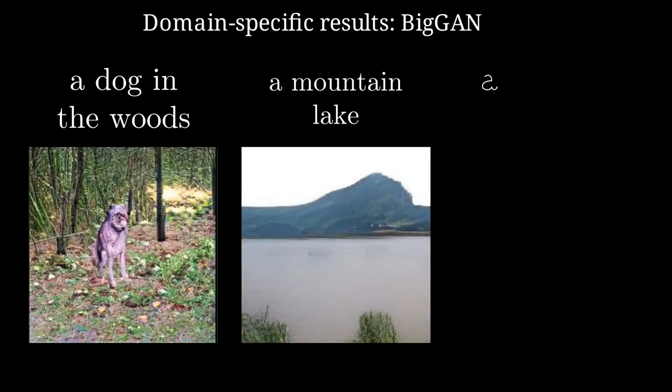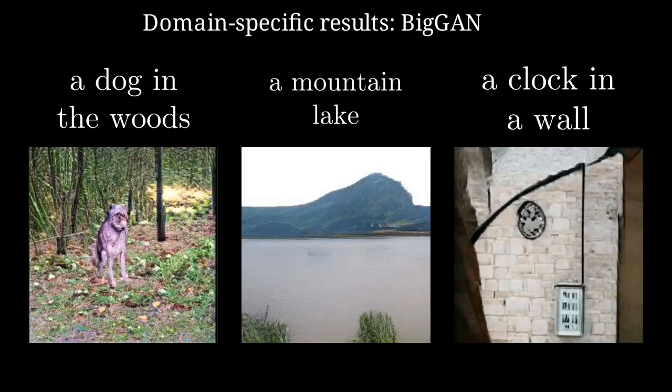These are the results for the general target text using BigGAN. The images resemble the target text, but major visual artifacts are present in this case.